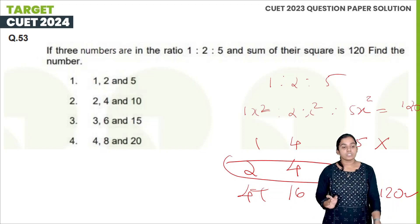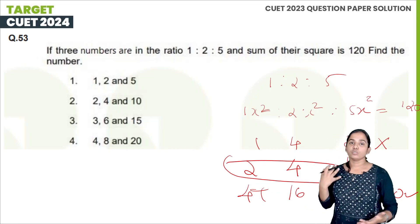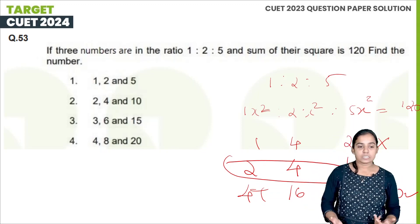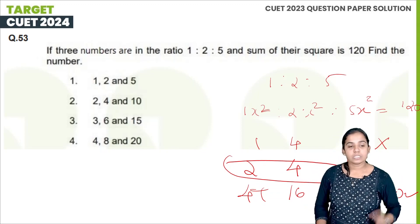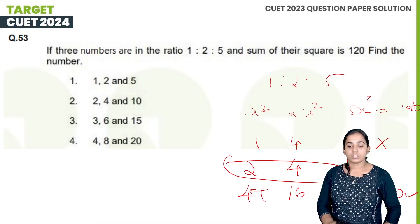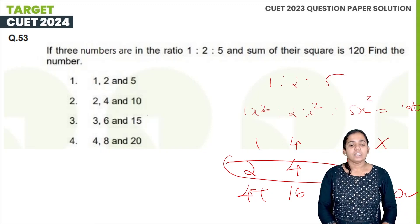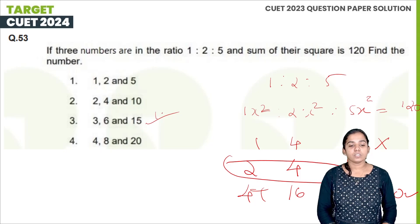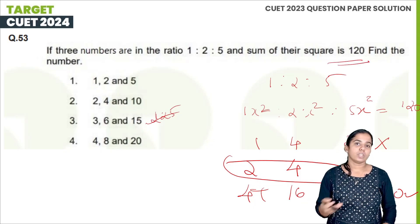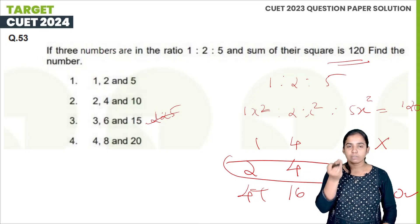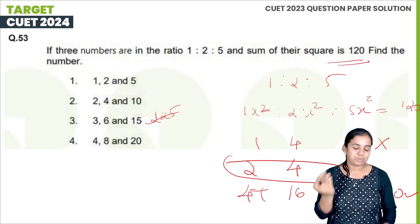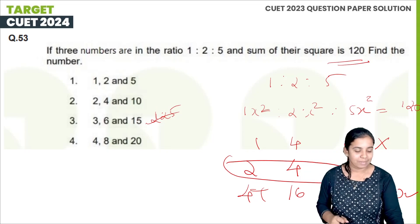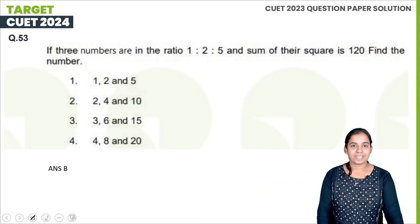If you check the options, you can eliminate easily — for example, if the option had 15, then 15² = 225, which is already over 120. So using minimum logic, the answer is B: 2, 4, 10.